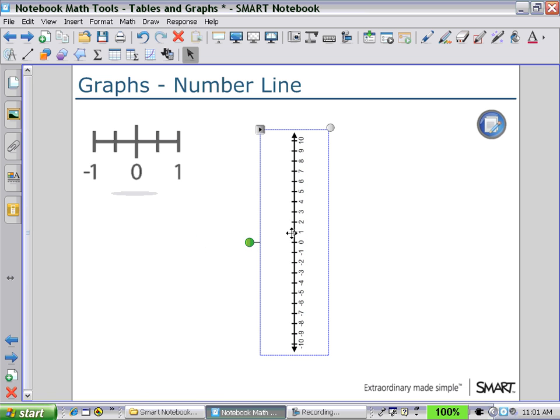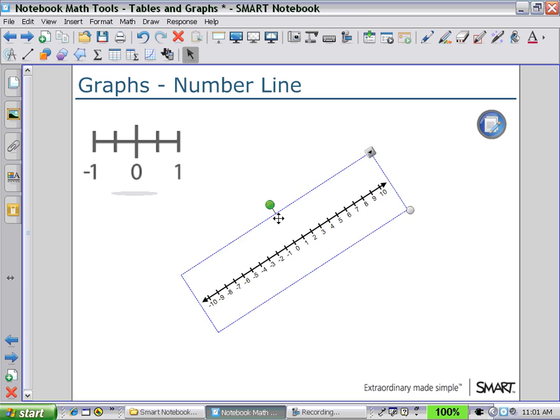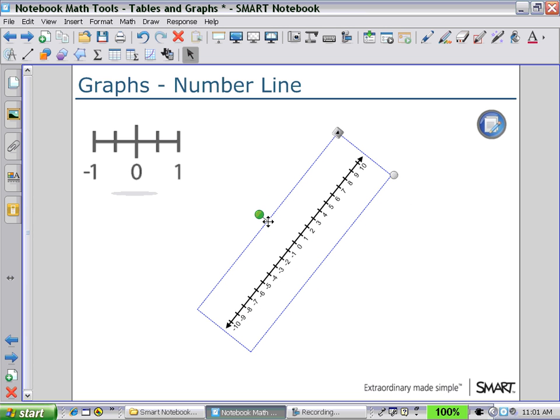And we can also rotate so that we could have horizontal or vertical number lines. Or in fact, slanted number lines where we could have discussions of, could negative direction be going down and to the left.